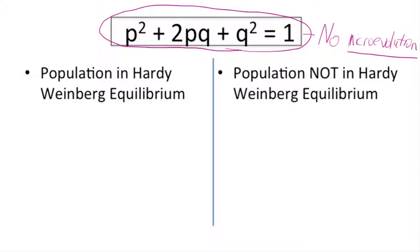allele frequencies or gene frequencies from one generation to the next in a population. But that is an unlikely event — in most situations a population is not in Hardy-Weinberg equilibrium because there are changes from one generation to the next in the allele frequencies. Now let's look at some of the conditions that would have to be true